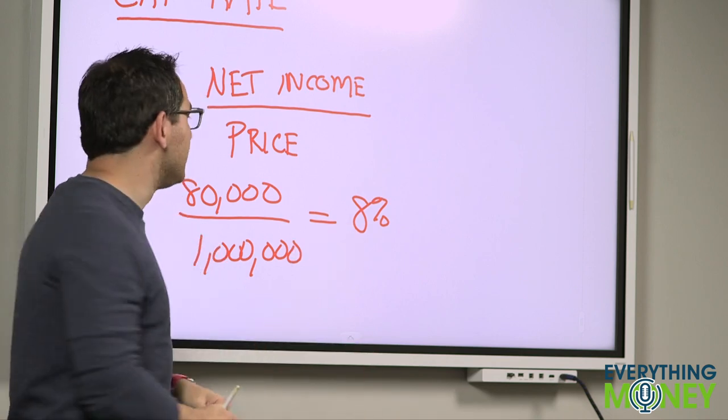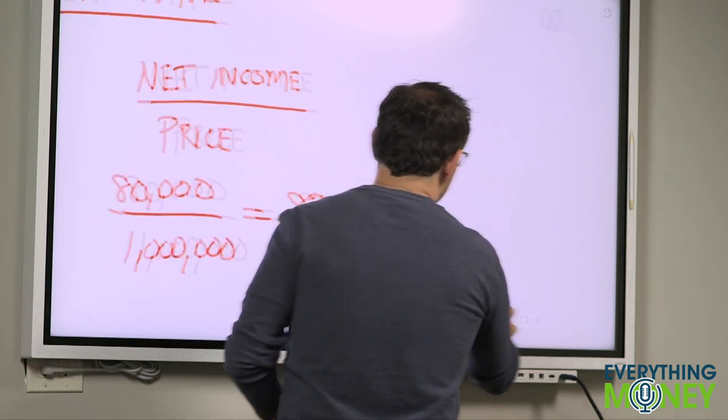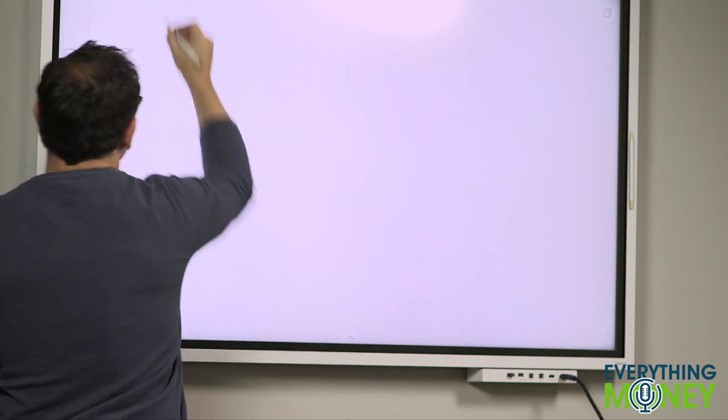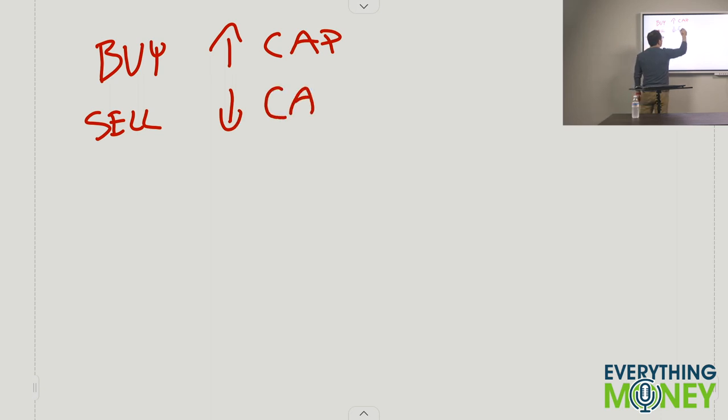But here's how it gets a little confusing for people. When you're buying a property, you want to buy at a higher cap rate. When you're selling a property, you want to sell at a lower cap rate. Now, why is that? I'm confused already. All right, so this is a very confusing thing. I'm going to try to break it down very simply.